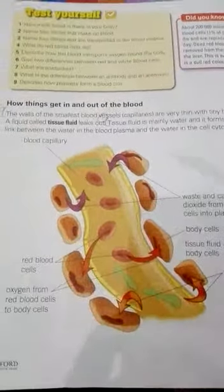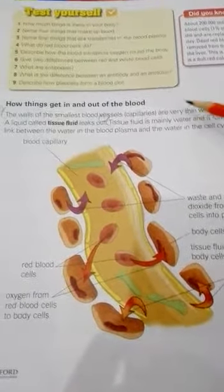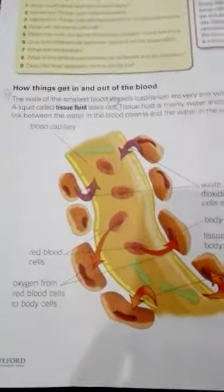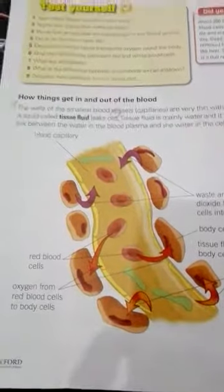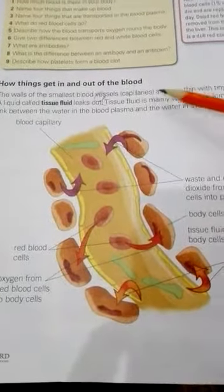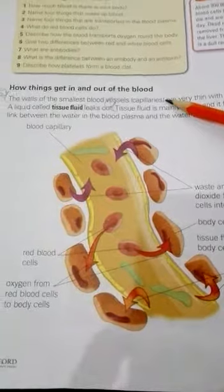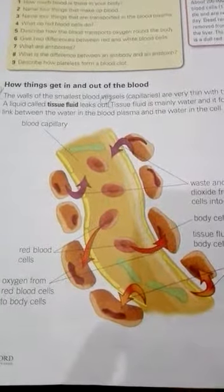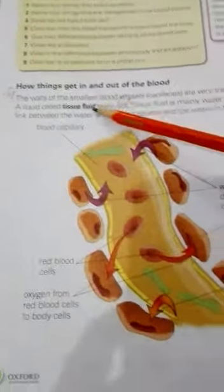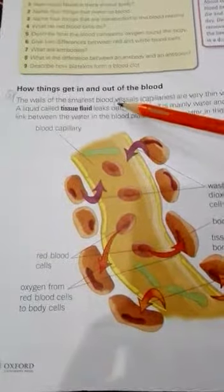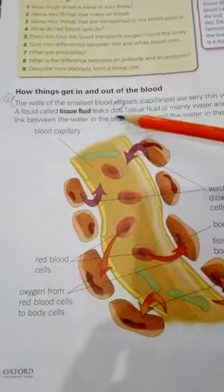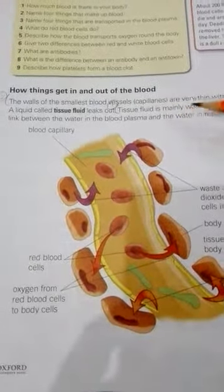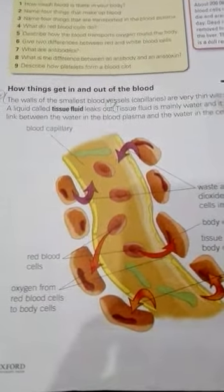The walls of the smallest blood vessels, called capillaries, are very thin with small holes in them. These are the small blood vessels that have tiny holes in them. Next, there is a liquid called tissue fluid that leaks out through these holes. Tissue fluid is basically water — it is composed of water.